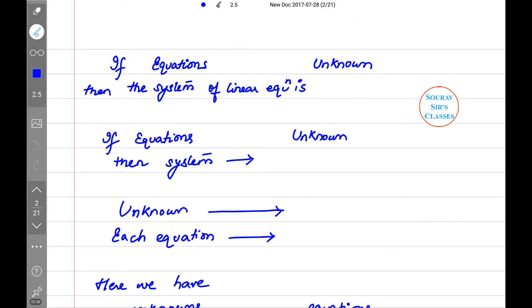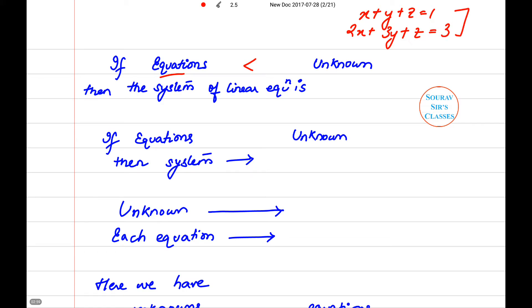...we need to summarize what we have learned so far with regard to simultaneous equations. Now we know that if equations are less than the unknowns - that means if you have two equations but there are three unknowns - then the system of linear equations or the system of polynomial equations is considered as under-determined.